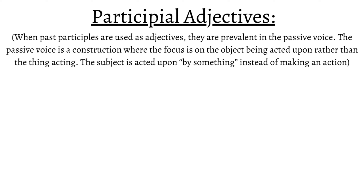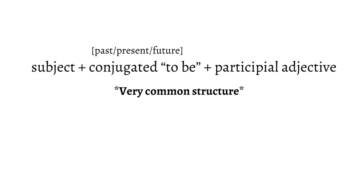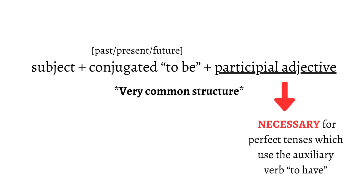The passive voice is a grammatical construction where the subject of a sentence receives the action of the verb. This means that the focus is on the object being acted upon rather than the thing acting, so the subject is acted upon instead of doing something. It's also used with the preposition "by". They're used for passive tenses because their action is done to the subject of a sentence, and they're very common with "to be" in all tenses of time.